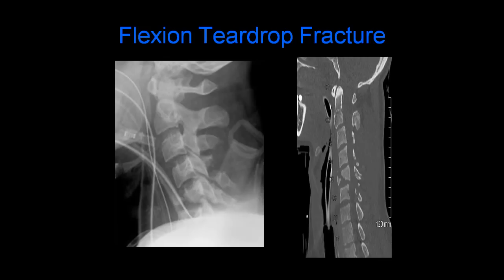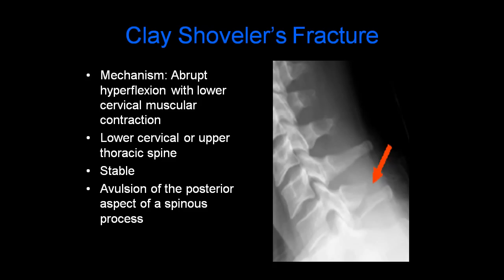Here is an example of a flexion teardrop fracture. We can see a kyphotic deformity of the cervical spine on the radiograph on the left, as well as a compression fracture of the anteroinferior aspect of the C5 vertebral body. On the right is the corresponding CT scan image. A clay shoveler's fracture is a fracture of the posterior aspect of a spinous process, most commonly C7 or T1. The mechanism is abrupt hyperflexion with lower cervical muscular contraction. This is considered a stable injury.